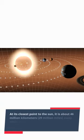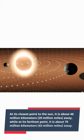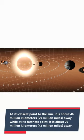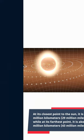At its closest point to the Sun, it is about 46 million kilometers, 29 million miles, away, while at its farthest point, it is about 70 million kilometers, 43 million miles, away.